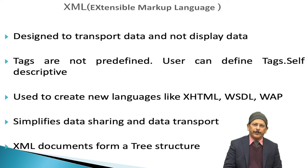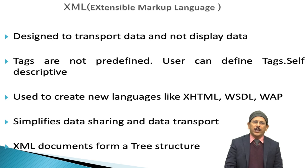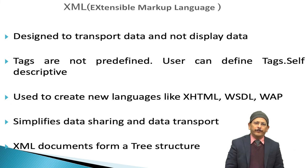Now, coming to XML — the second part of this lecture. XML is the Extensible Markup Language, which is designed to transport data and not to display data. Tags are not predefined in XML. Unlike HTML, which has predefined tags like bold and italic, in XML the user can define tags according to their needs. It is used to create new languages like XHTML, WSDL, and WAP, and it simplifies data sharing and transport. XML documents form a tree structure and are very important for transporting data from one system to another.